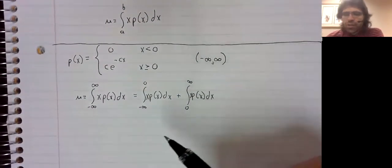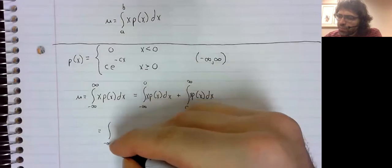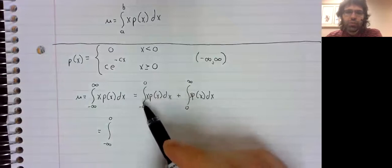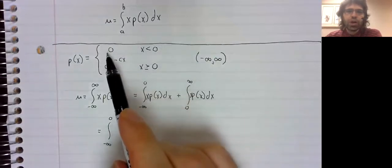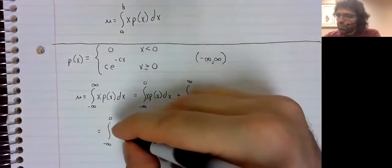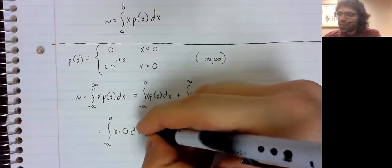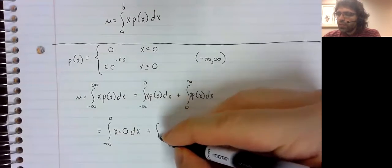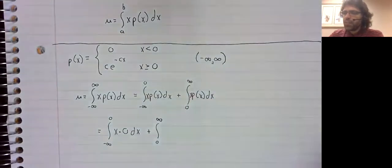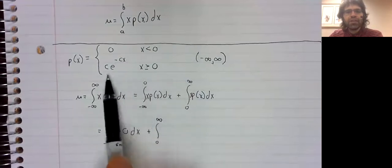And the advantage of choosing zero as our break point is that for this first integral from negative infinity to zero, p of x is zero. And from zero to infinity, x is greater than or equal to zero, and we have this.